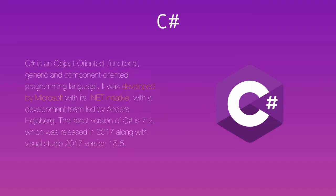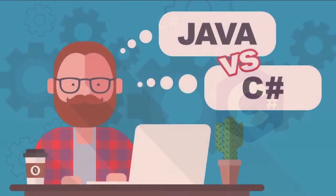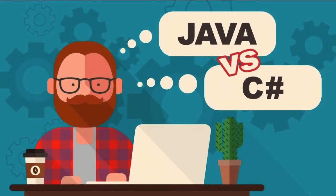C# is obviously very similar to Java — it is an object-oriented programming language — but it has a lot more features than Java when comparing the two as programming languages.